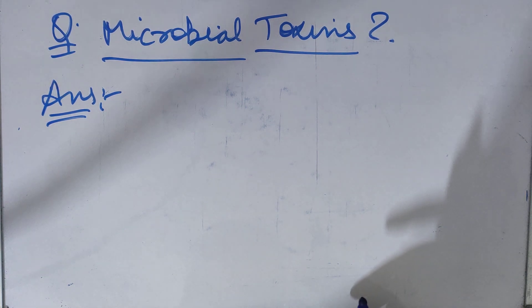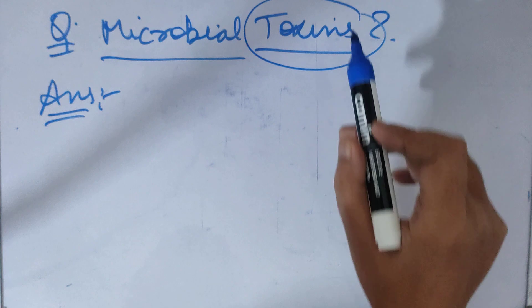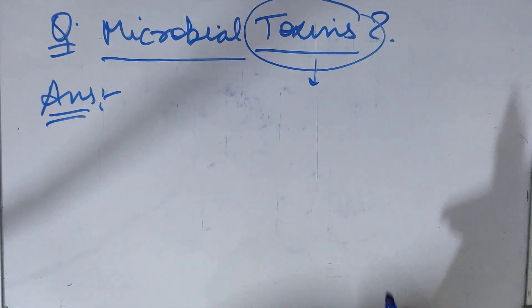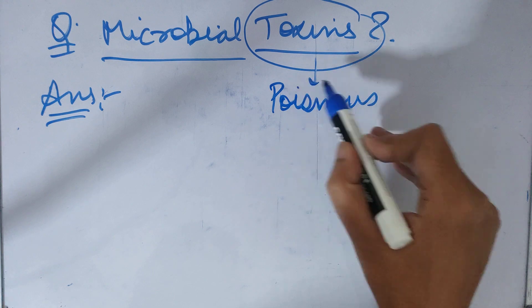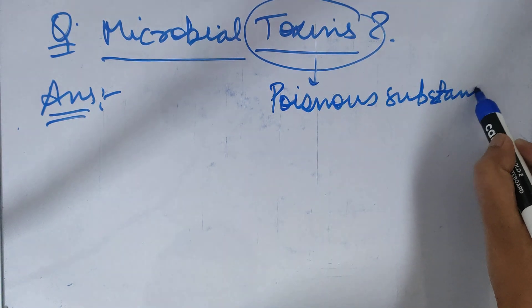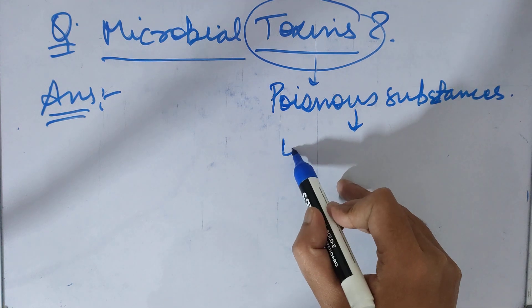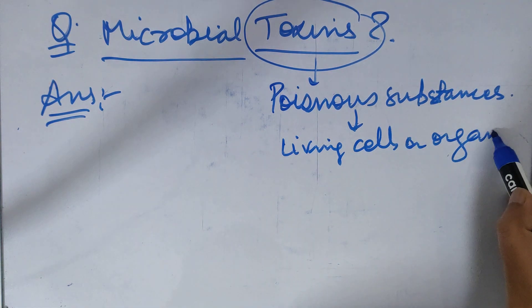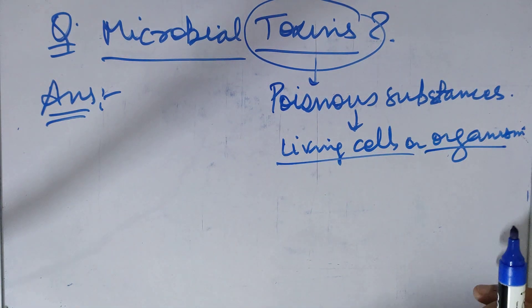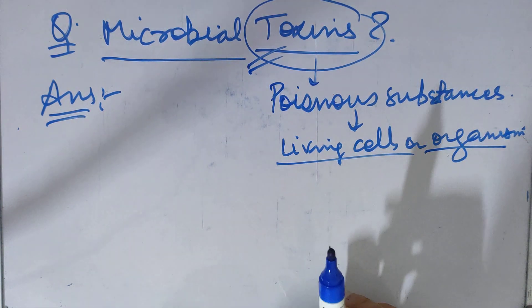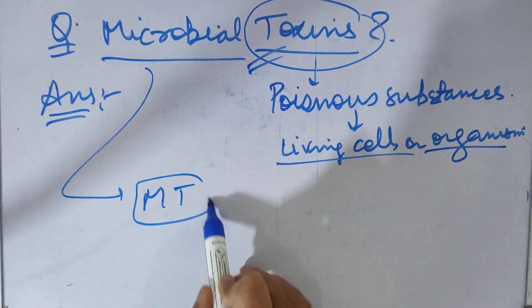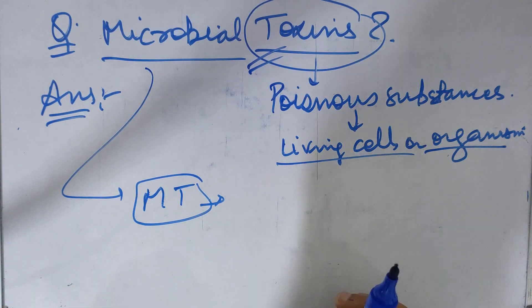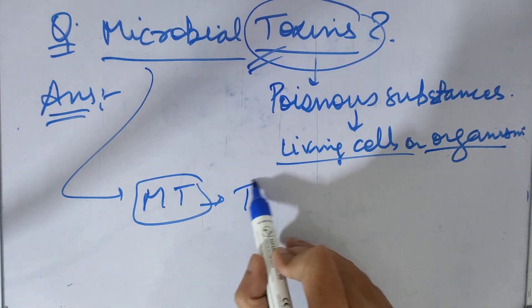So let's discuss what are microbial toxins. First of all, we have to know what are toxins. Toxins are poisonous substances produced by living cells or organisms, which is a poisonous substance produced by living cells or organisms. Microbial toxins are toxins produced by microorganisms.